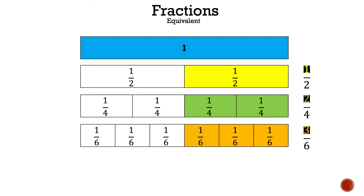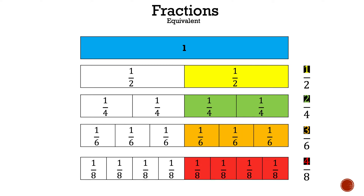Now we're going to divide the one rectangle into six equal sections and just focus on the right-hand side. And now we're going to do it again — we're going to divide it into eight equal sections and mainly focus on the right-hand side. So as we can see, it doesn't really matter how many times you divide it, as long as you keep dividing it, the right-hand side will be equivalent if you do it by even numbers.